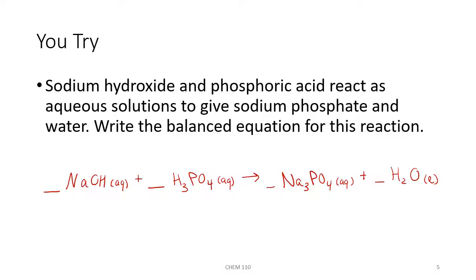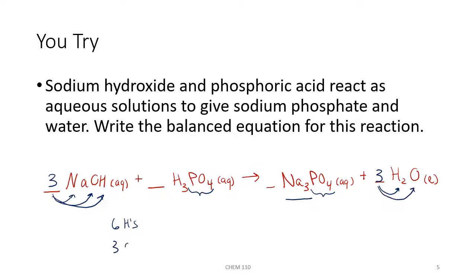Next for balancing, notice we have three sodium atoms on the product side and only one on the reactant side, so we throw a 3 out in front of NaOH. I like to balance polyatomic ions as a unit — we have one phosphate unit on each side. The 3 distributes to the sodium, oxygen, and hydrogen, giving us six hydrogens on the left. We put a 3 in front of H2O to get six hydrogens on the right. Everything checks out; our coefficients are 3, 1, 1, and 3.